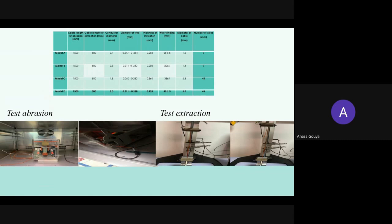An abrasion test is performed using a 1.5-meter cable, the end of which is connected to the positive pole of the machine. A negatively charged blade of the machine moves back and forth over the cable with a force of 7 Newton and a stroke length of 26 millimeters. It stops automatically when it touches the conductor as soon as the abrasion has worn down the insulation.